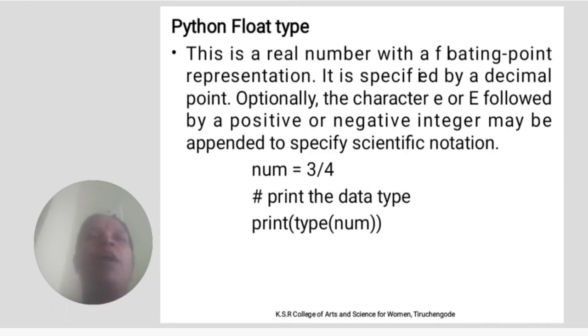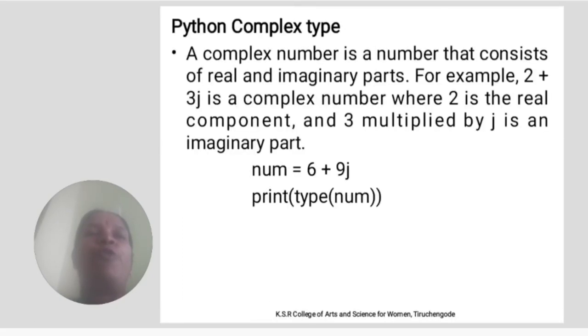Python float type. This is a real number with a floating point representation. It is specified by a decimal point. Optionally, the character e followed by a positive or negative integer may be appended to specify scientific notation. Example: num equal to 3.4.